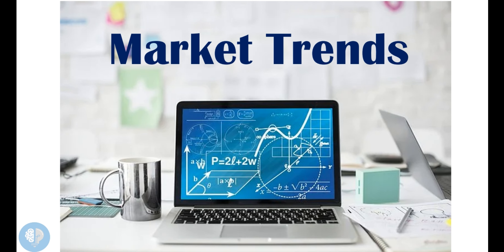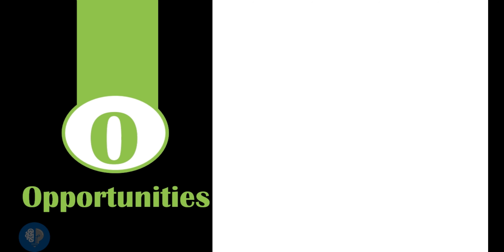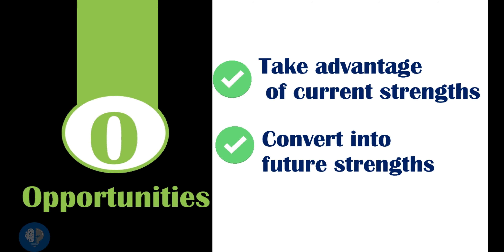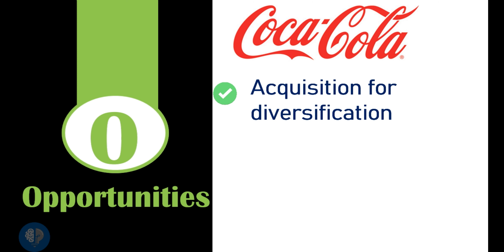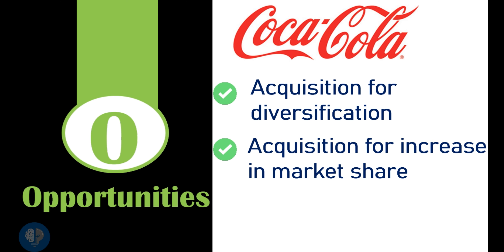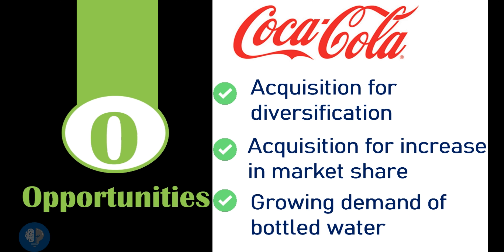These are generally sourced using market reports and studies. The third element of the SWOT matrix is Opportunities. These are factors which an organization can exploit and convert into strengths in the future. For example, in the case of Coca-Cola, opportunities might be acquisition of a food-oriented company to help in diversification, or acquisition of a local beverage brand to strengthen hold in a particular market, and a growing demand of bottled water in developing countries.